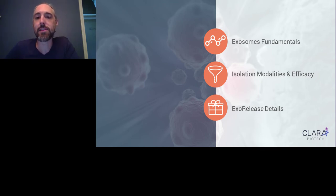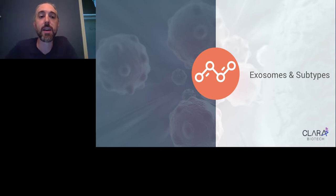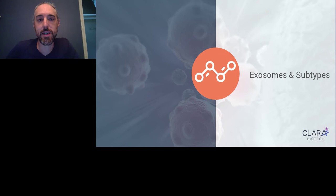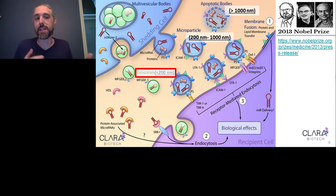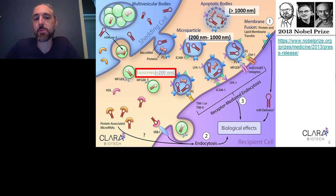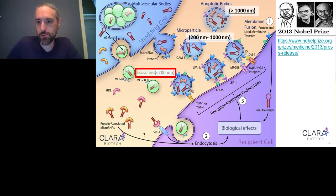Let's first talk about exosomes and subtypes. What are exosomes and what are subtypes? By the end of this, you'll understand how we define them, and we'll talk about subtypes and what they mean, how they're going to impact research in the future, and how that subtype activity can affect downstream work and analysis. Exosomes are created in the endosomal pathway specifically, as opposed to microparticles, vesicles, and apoptotic bodies — they come from a very special pathway. Exosomes are generally recognized to be less than 200 nanometers in diameter, which does overlap with other particles created in the body.